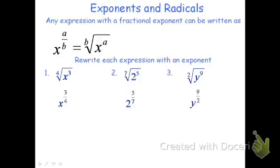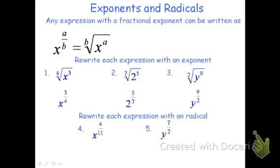The square root of y to the 9th would become y to the 9 halves. Now I'm going to put two examples and go the other way — we're going to write each expression using a radical. For problem 4, we have x to the 4 elevenths. 11 is on the bottom, and that becomes the index of the radical.